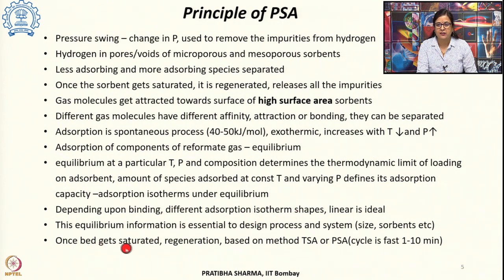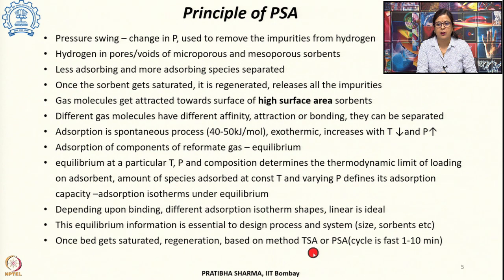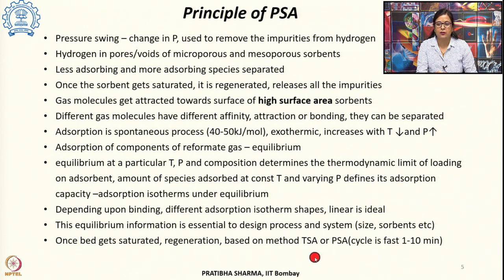Once the bed gets saturated after contact with impurities, regeneration of the bed can be done either by increasing temperature — which is called temperature swing adsorption — or by lowering the pressure, which is pressure swing adsorption. Pressure swing adsorption has a faster cycle of about 1 to 10 minutes, while temperature swing adsorption is a slower process that may take hours, because energy takes time to be supplied to and removed from the bed.